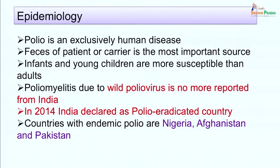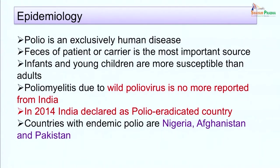Regarding the epidemiology of poliomyelitis, polio is an exclusively human disease with no extra-human reservoir. Feces of patients or carriers is the most important source of infection to the community. Infants and young children are more susceptible than adults. In India, more than 80 percent of children below 5 years of age have antibodies to poliovirus. Poliomyelitis due to wild poliovirus is no longer reported from India; in 2014, India was declared a polio-free country. However, vaccine-associated and vaccine-derived poliomyelitis cases are still reported. The only countries with endemic poliomyelitis are now Nigeria, Afghanistan, and Pakistan, so wild poliovirus may get imported to India from neighboring countries.